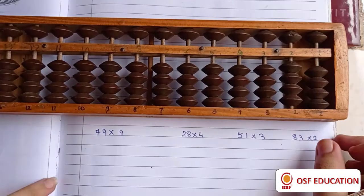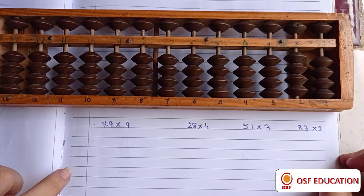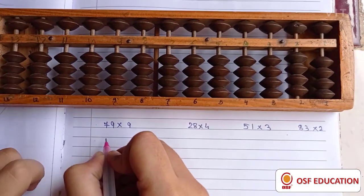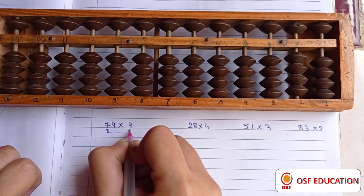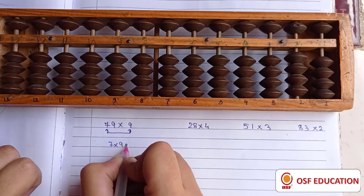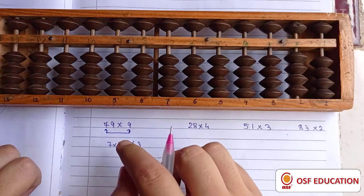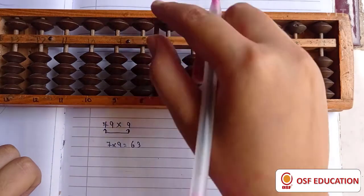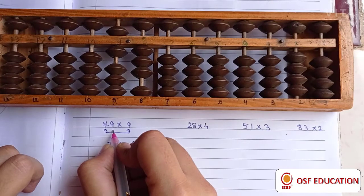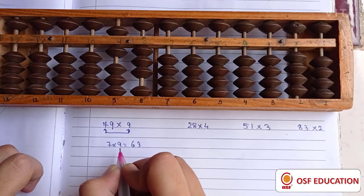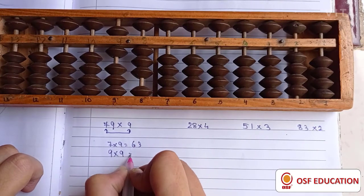So now to calculate these 4 extra sums using our abacus with the same method. First of all, 79 times 9. 7 nines are 63. So placing 63 from 100s place, that is 6 and 3. Now adding the multiplication of 9 times 9 is equal to 81.